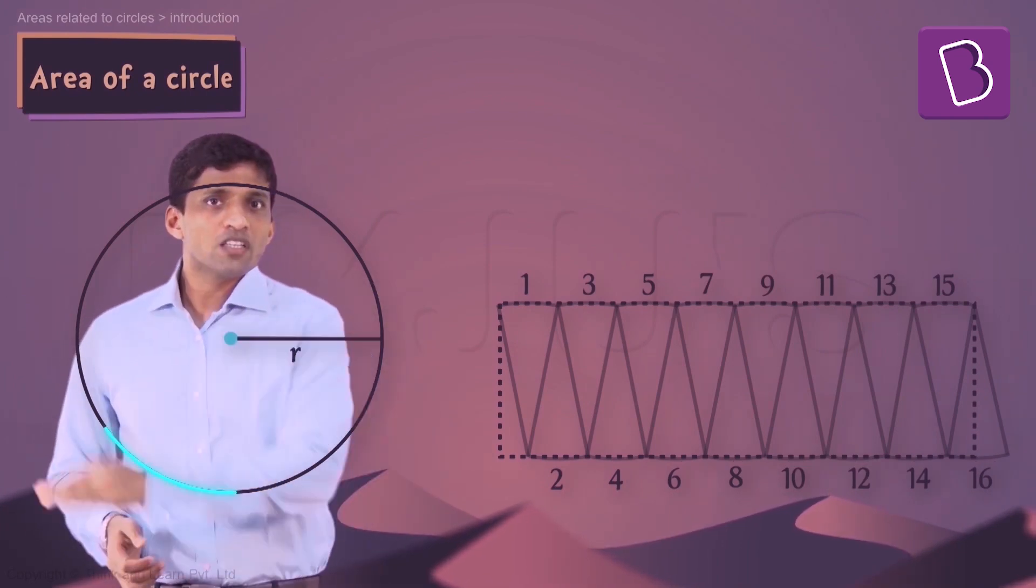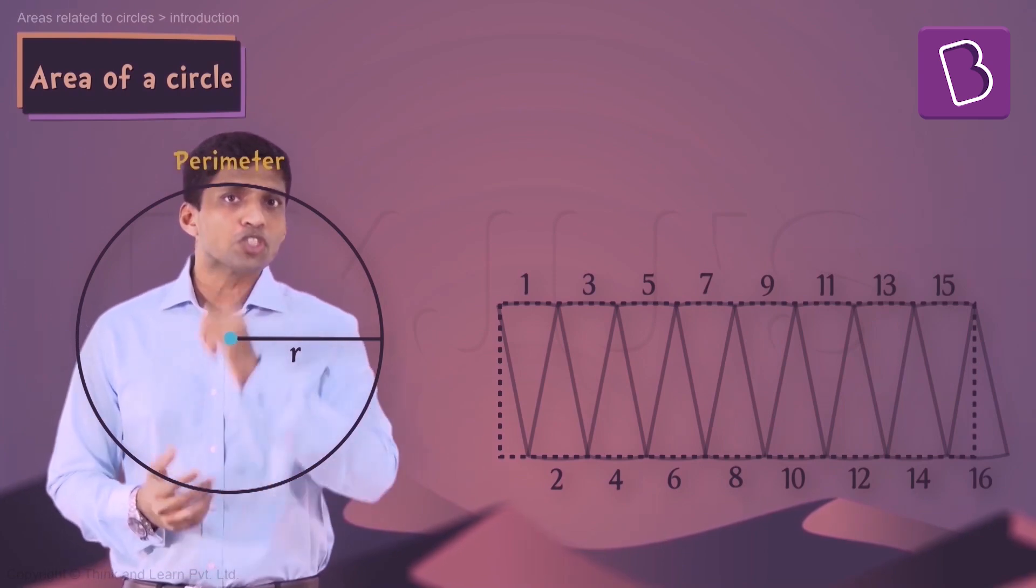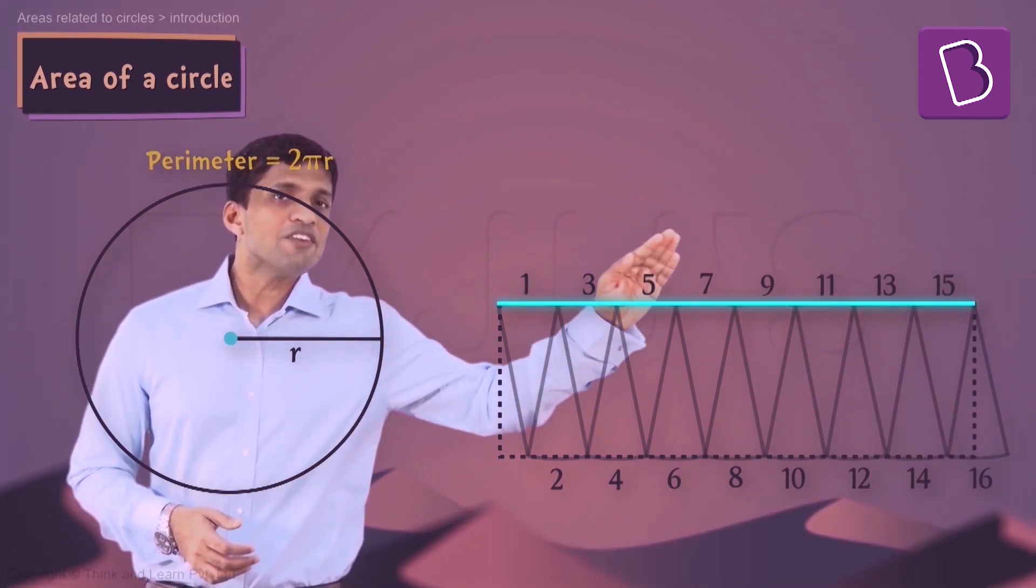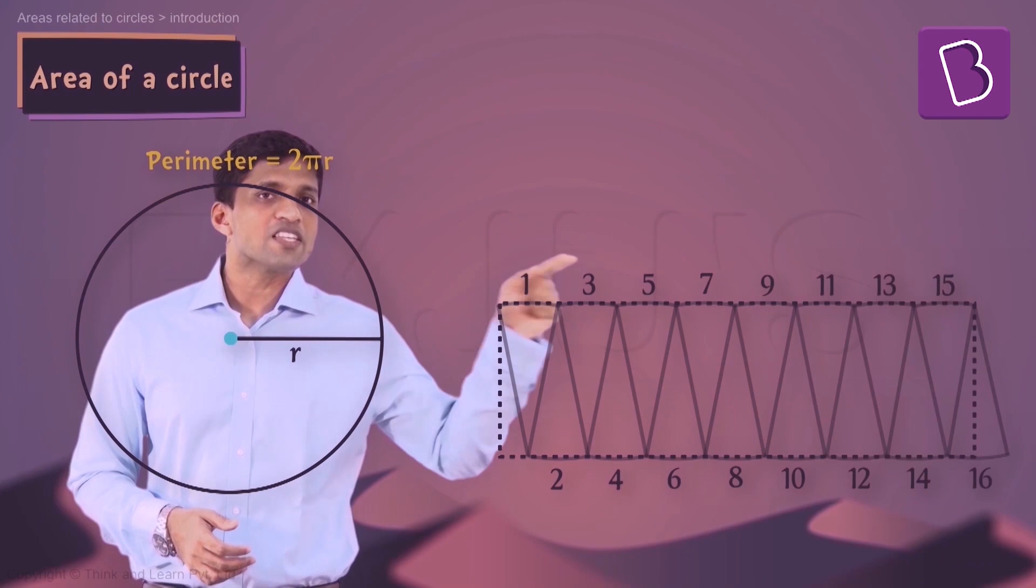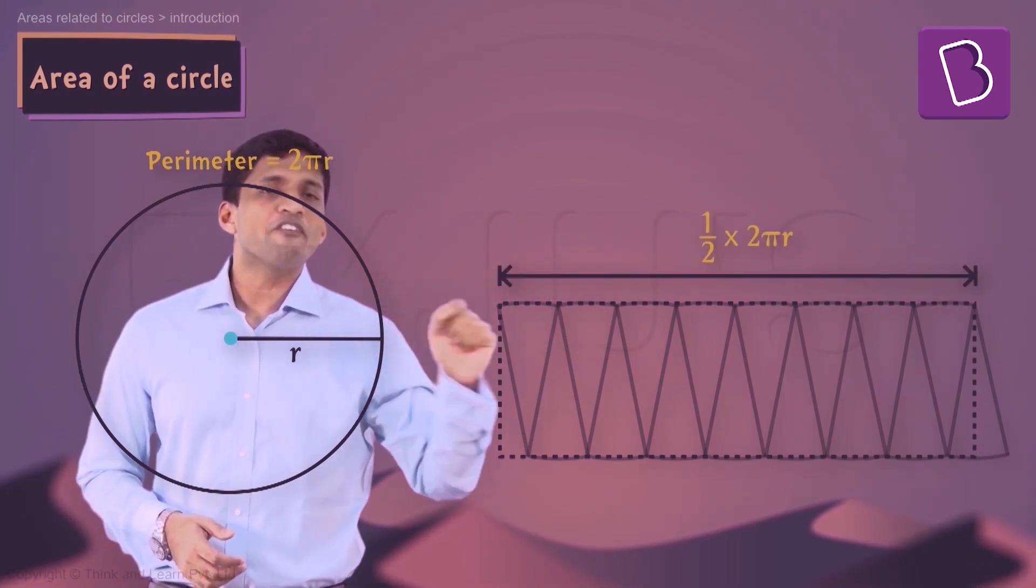So what you can easily understand is this complete which is length of this nothing but the perimeter which is 2πr. Here one side will be half of it because only half of the sectors are coming on top. So length here will become half of 2πr.